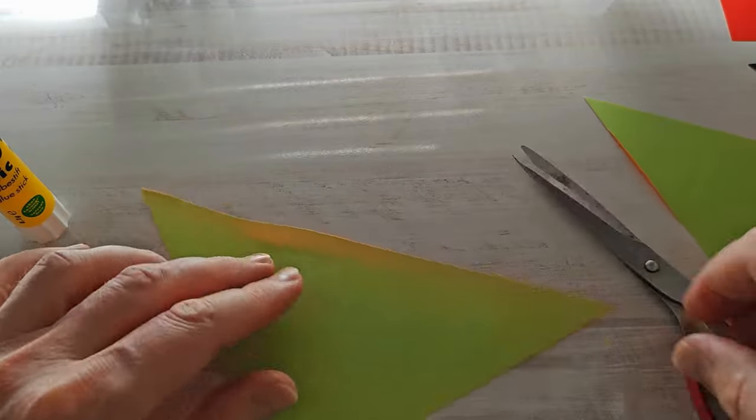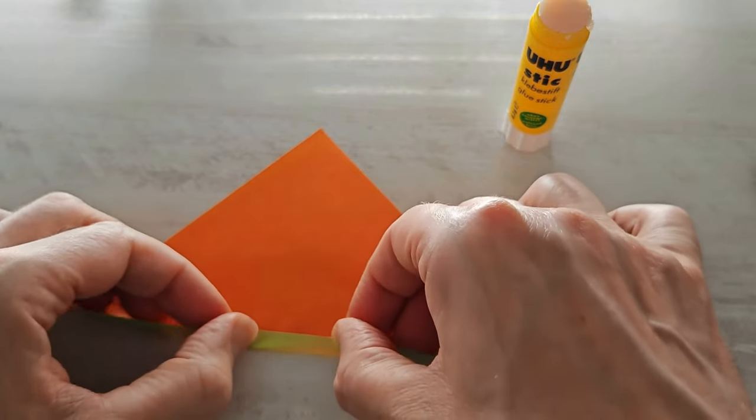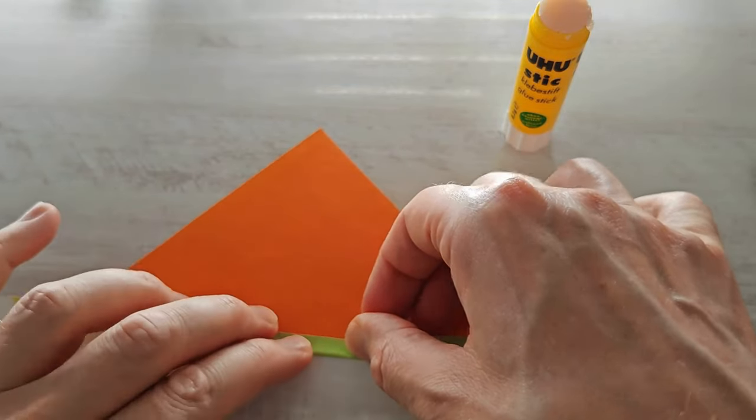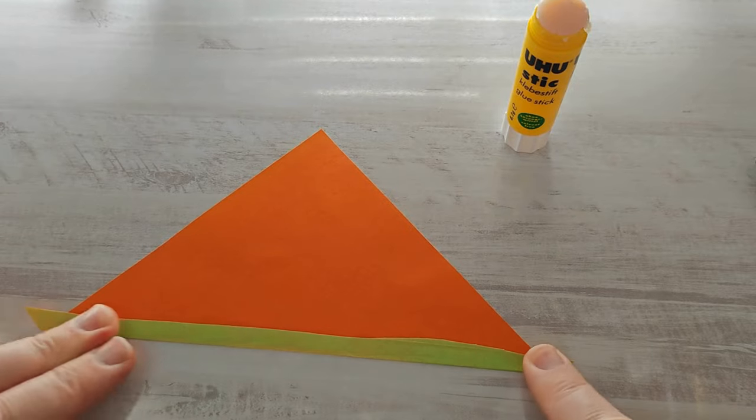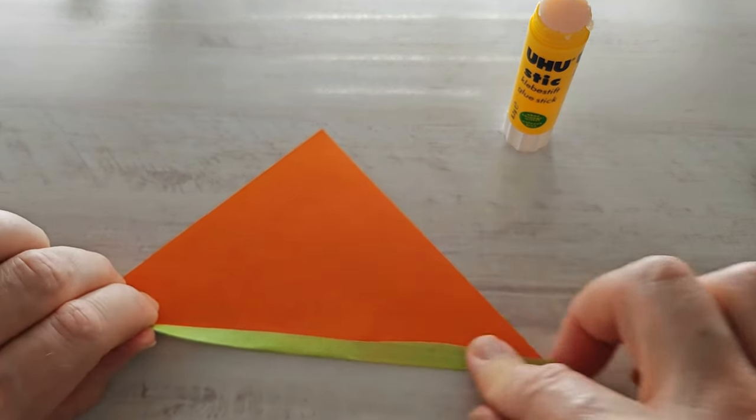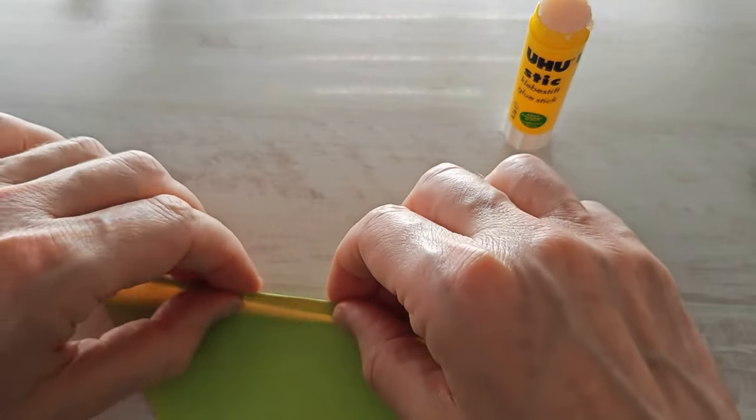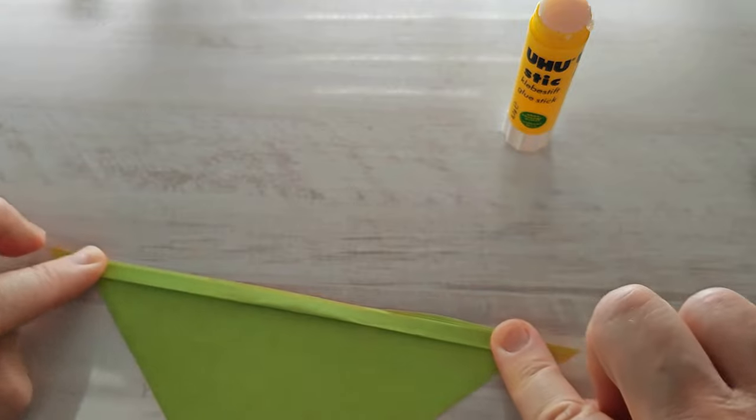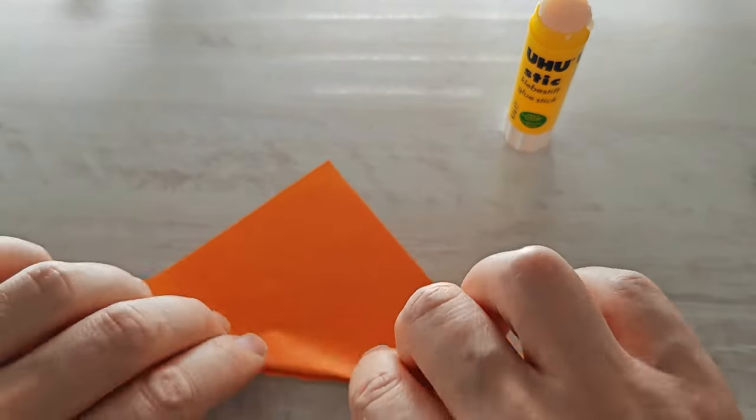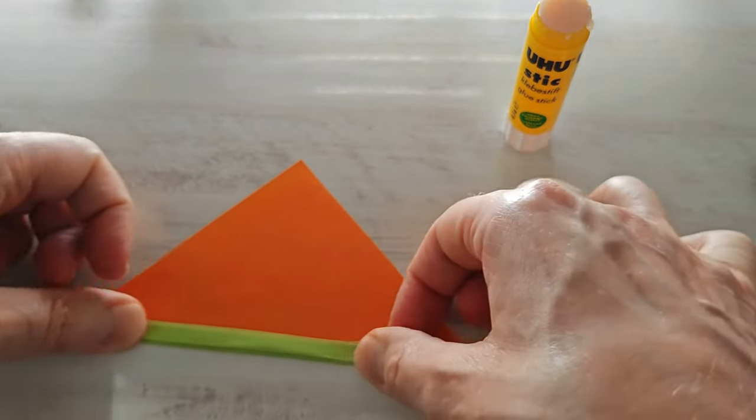I'm going to make the side first. I want you to use nice thin stripes. Just keep folding back and forth. Just keep switching. Nice crease in there.